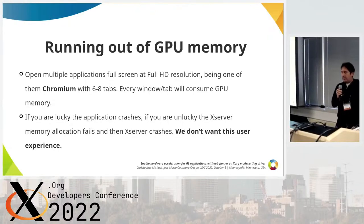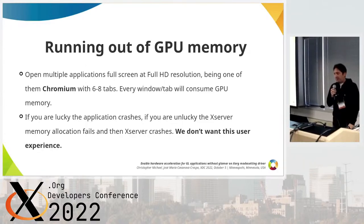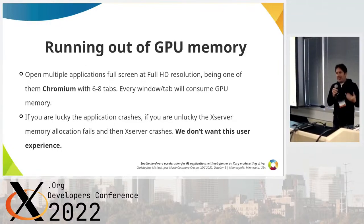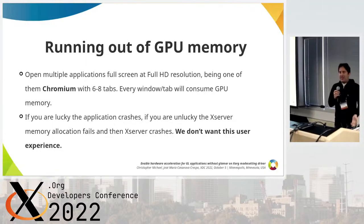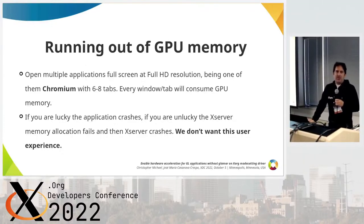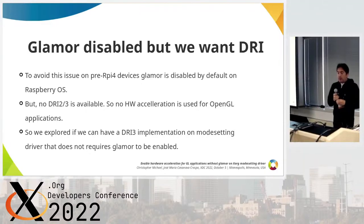To reproduce the issue, you just open multiple applications on screen. A good test case is to simply run Chromium and open several tabs — a normal use case — where every window or tab uses GPU memory. If the kernel cannot provide new GPU memory, the application could crash. But if you are unlucky and using glamour, launching a new window when there is no available memory means the X server itself could crash.